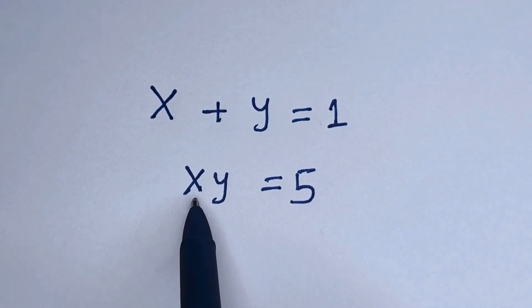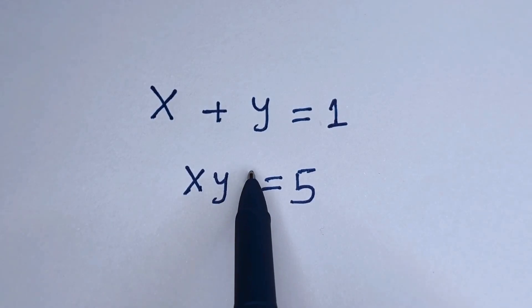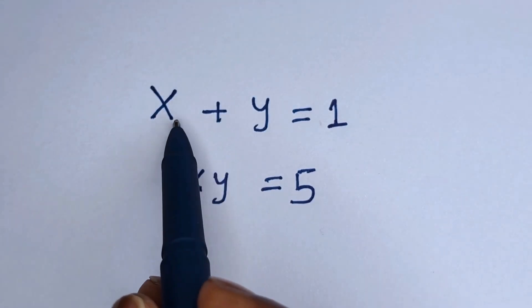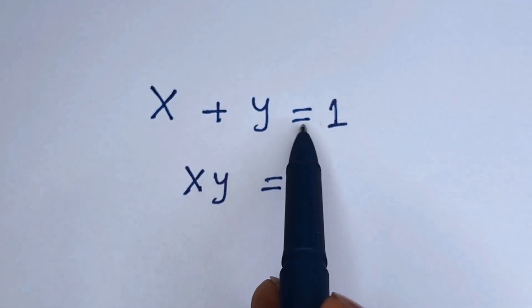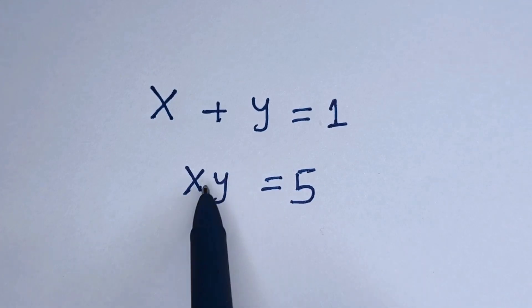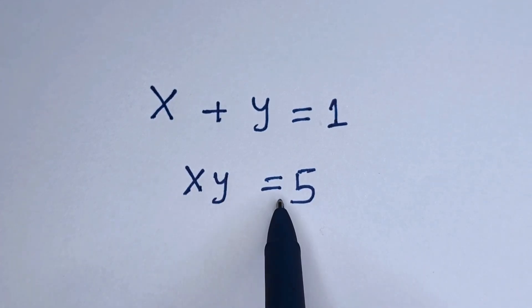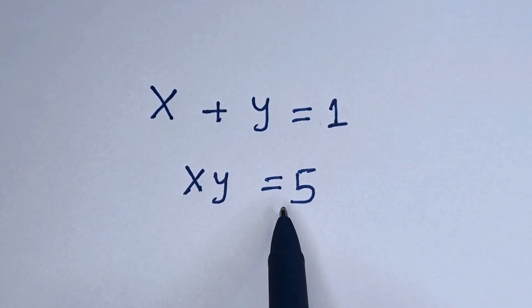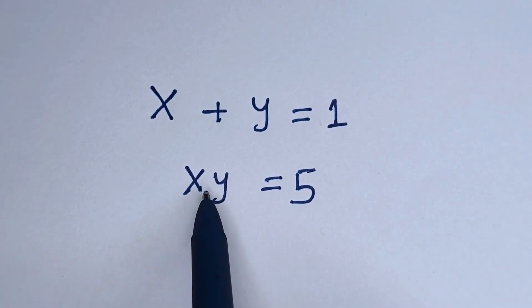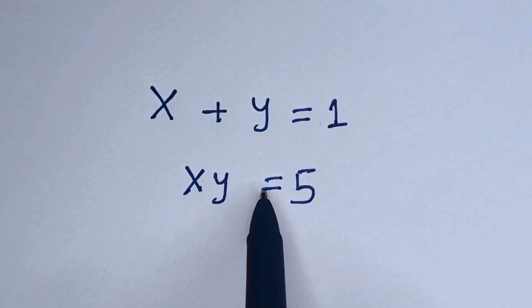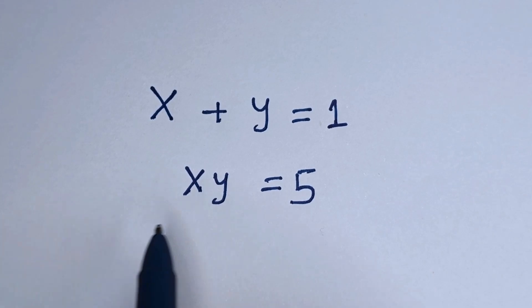Hello. How to solve for S and Y in this equation: S plus Y is equal to 1, and S times Y is equal to 5. Before I proceed, please don't forget to like, share, comment, and subscribe to my channel. Thank you.